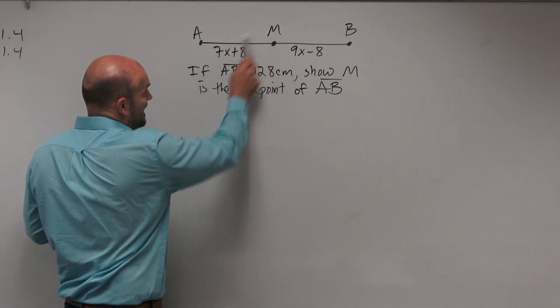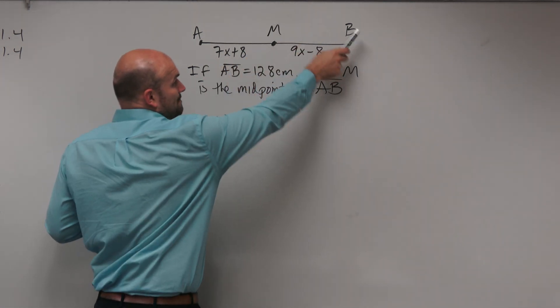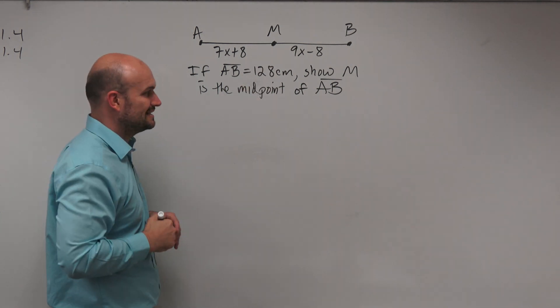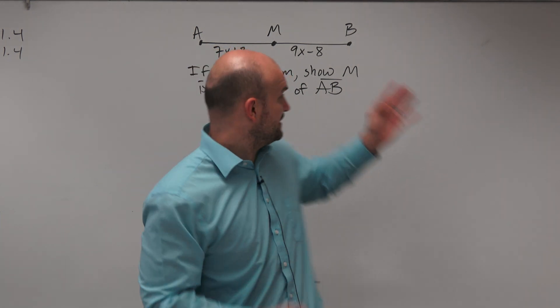That means AM equals MB. If we know AM equals MB, then M has to be exactly in the middle. How are we going to figure out if they're equal? We need to find x.